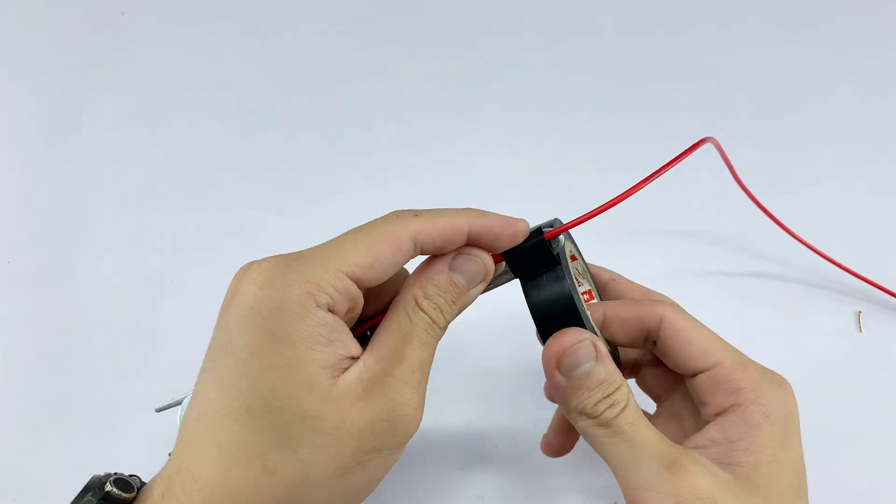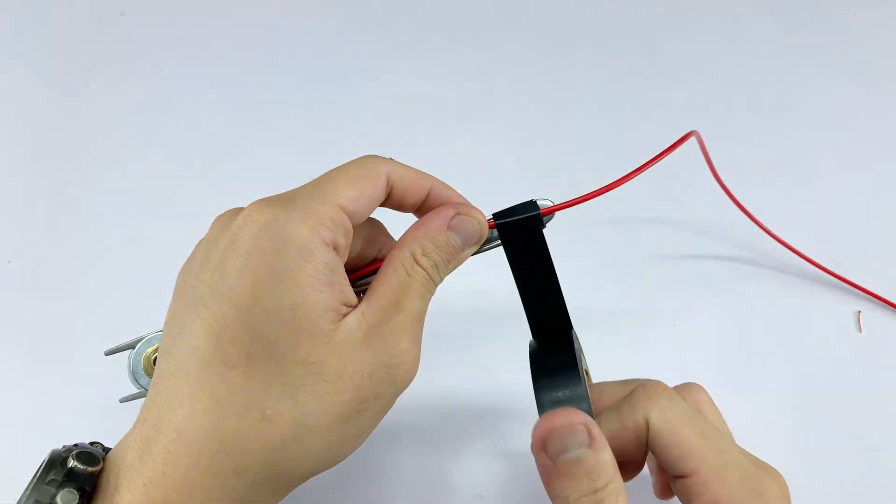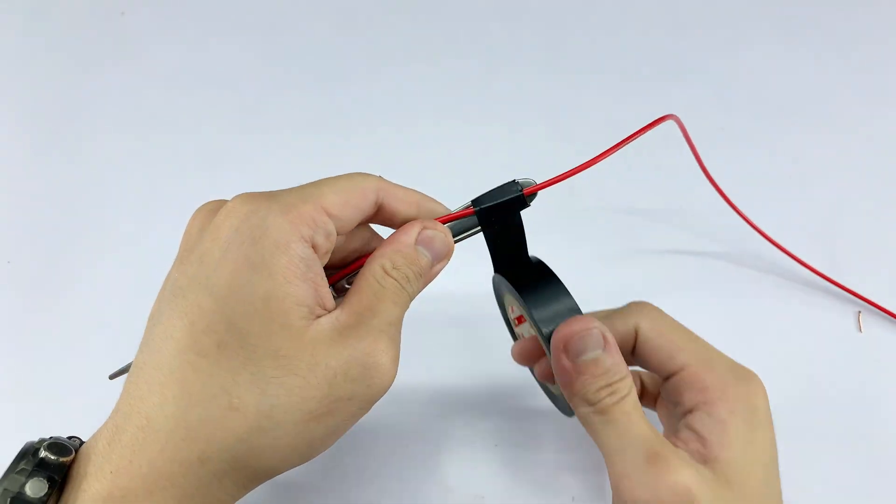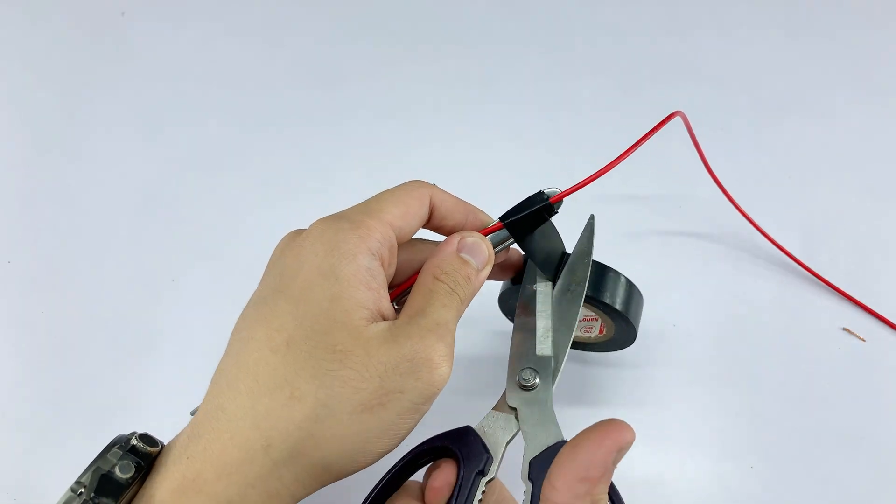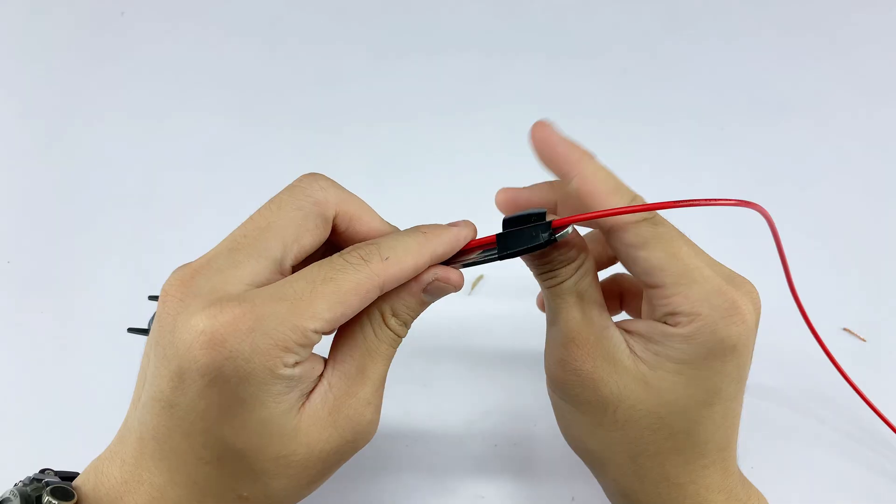To prevent any accidental short circuits and for added safety, I'm wrapping electrical tape securely around the exposed wire sections and along the handle of the fork. This insulates the connections and makes the tool safer to handle.